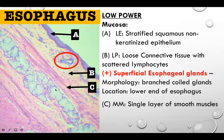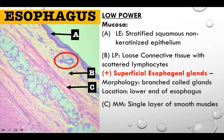Letter A is the lining epithelium — it is stratified squamous non-keratinized epithelium. Letter B is the lamina propria, composed of loose connective tissue with scattered lymphocytes. In this area you will find the superficial esophageal glands, which are branched coiled glands located at the lower end of the esophagus.